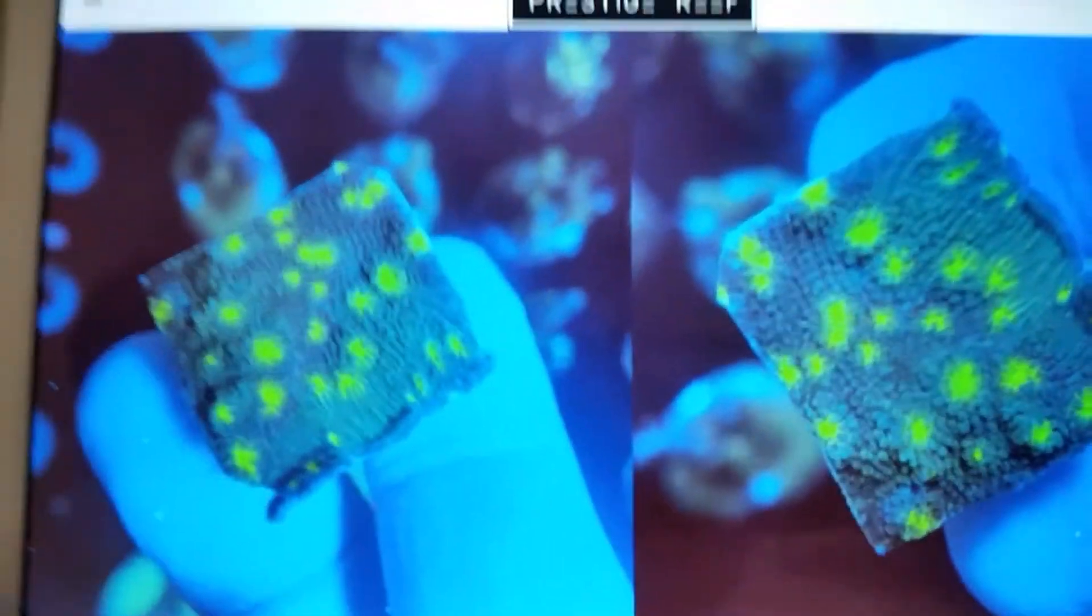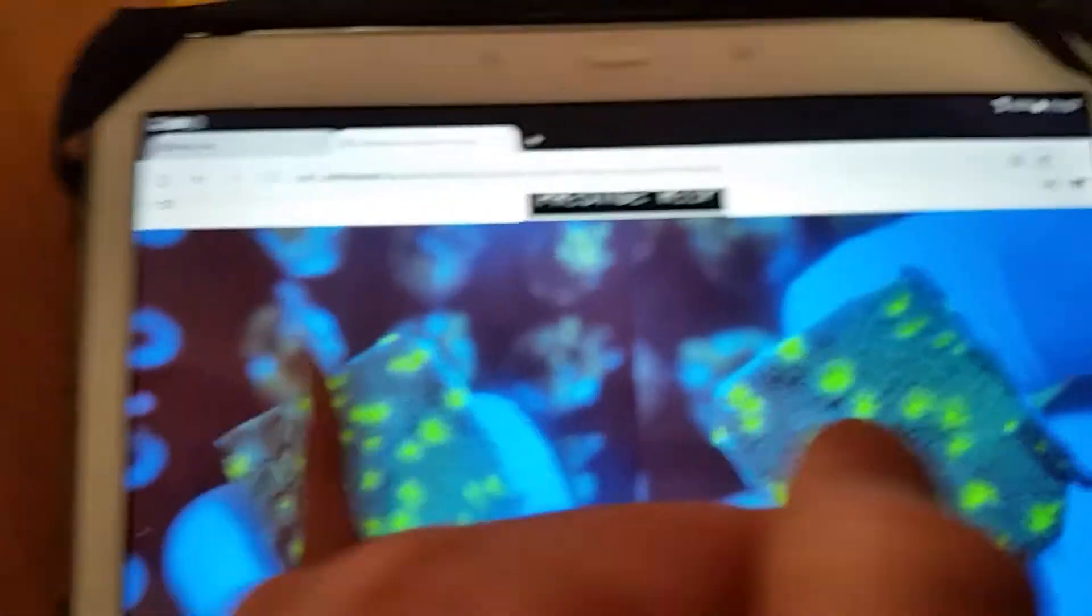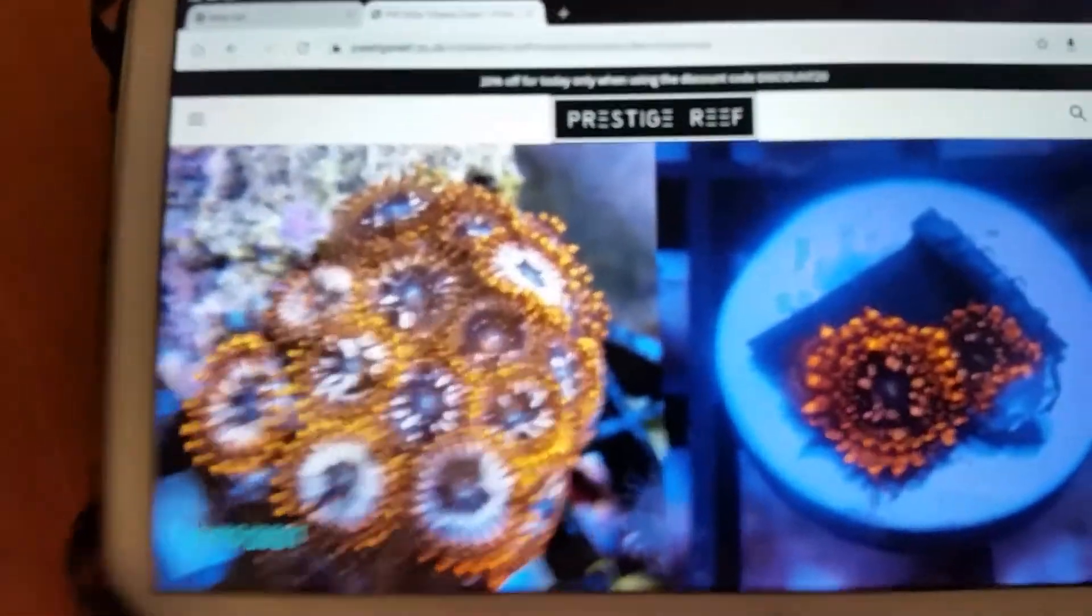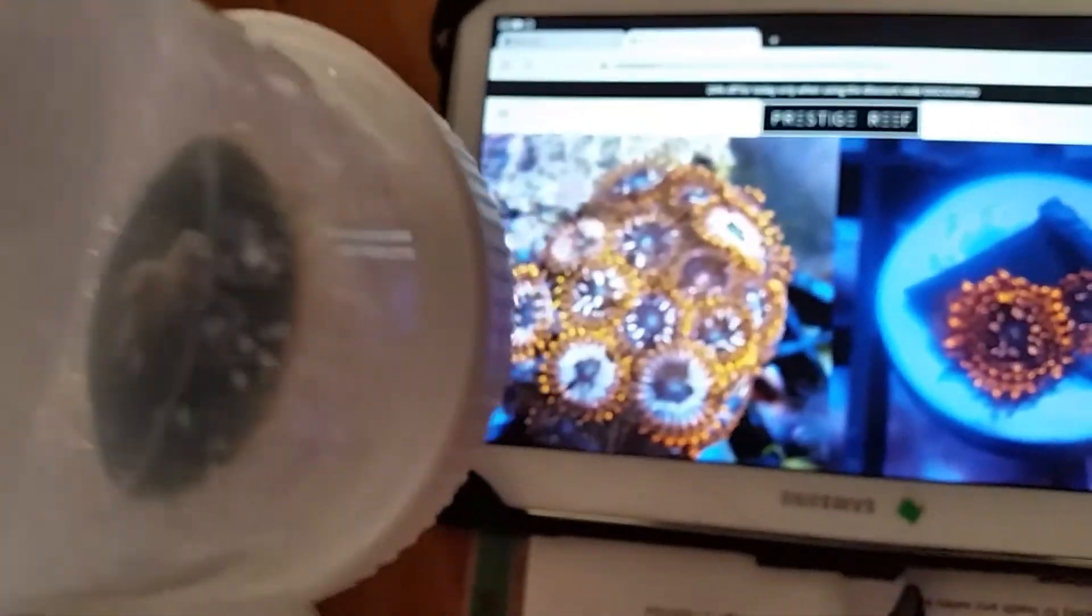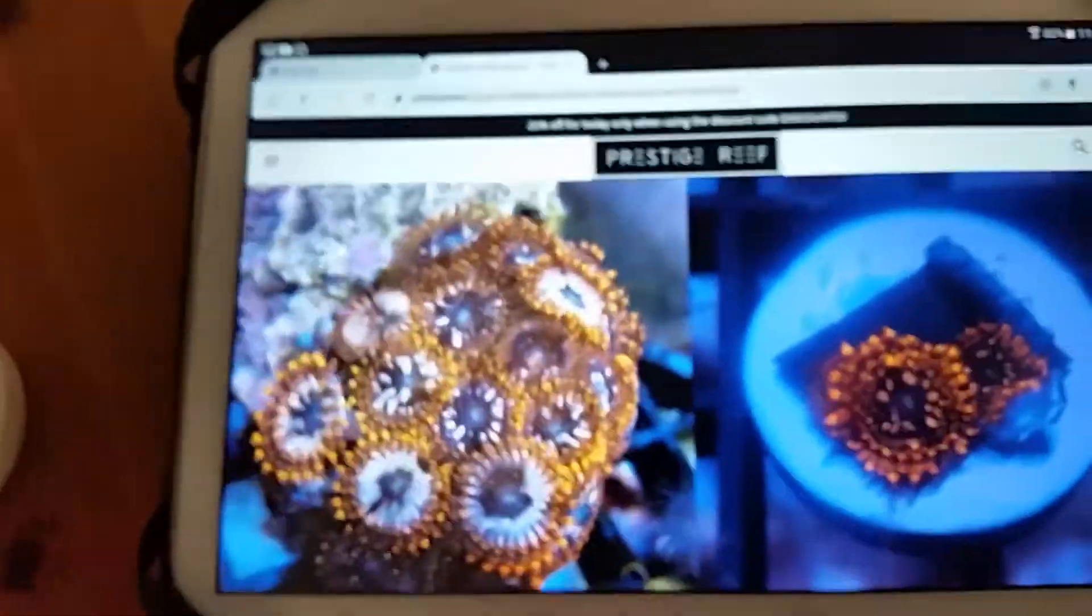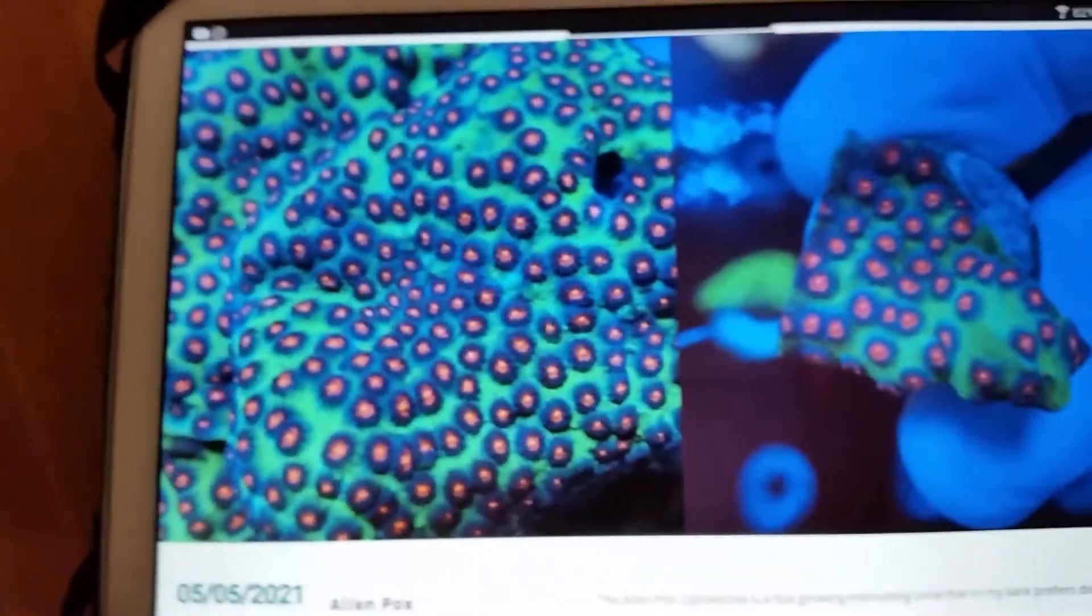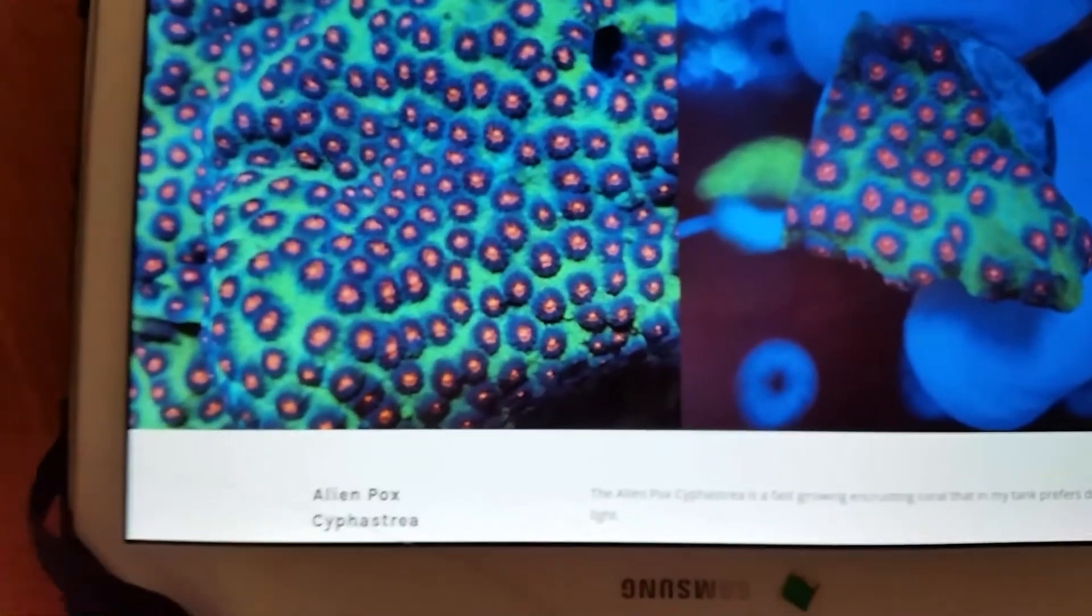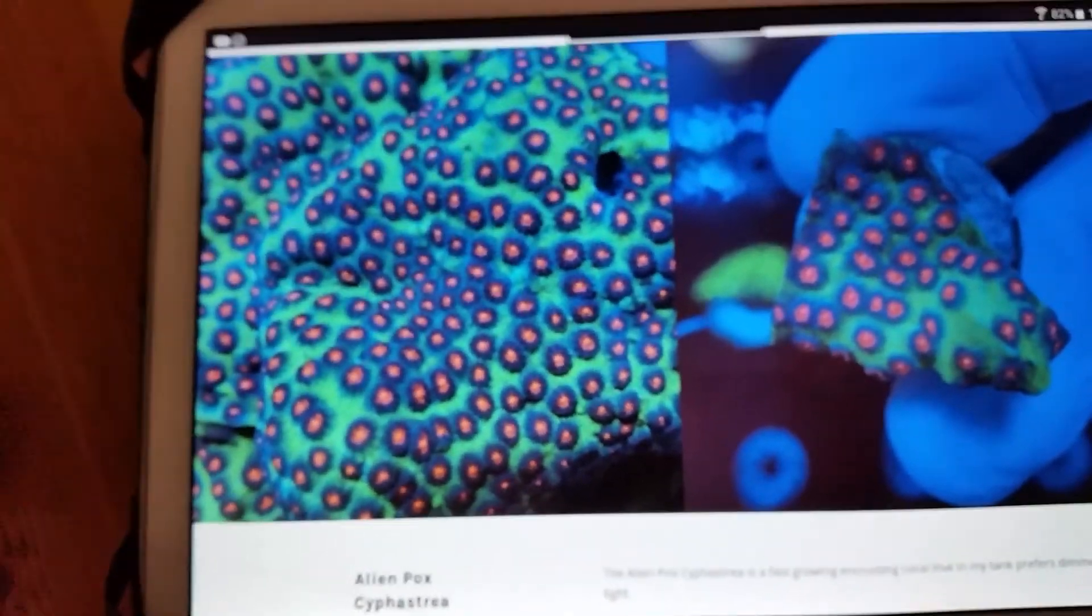So this is the Hollywood Stunner, which is this one. And then we have, that's the Utter Chaos, which is this one. I believe I've got like three or four heads. I've got three heads. So that's an even better bonus. And then I got the Alien Pox Trasclea, everything what it's called. So yeah, super happy.